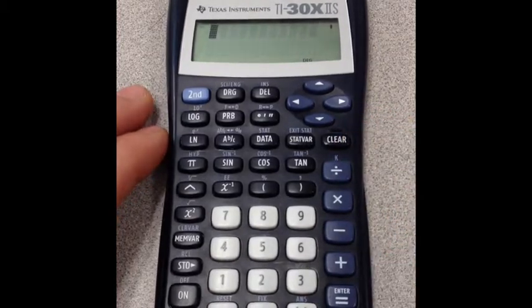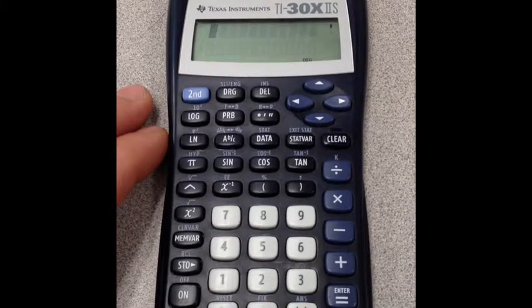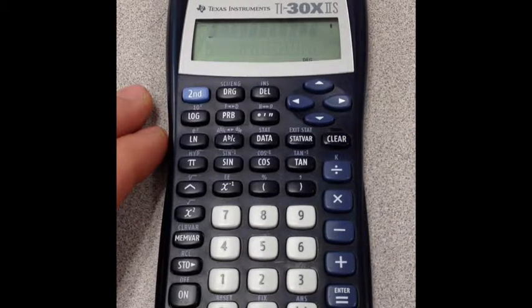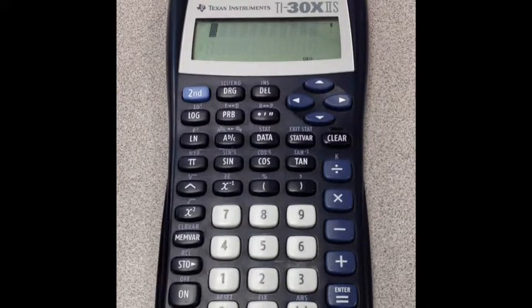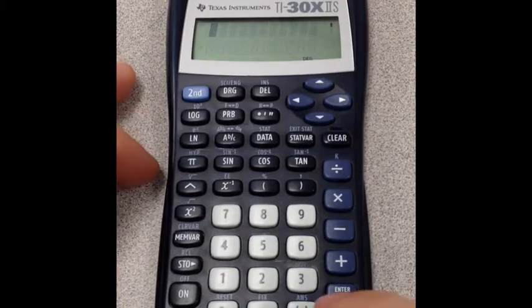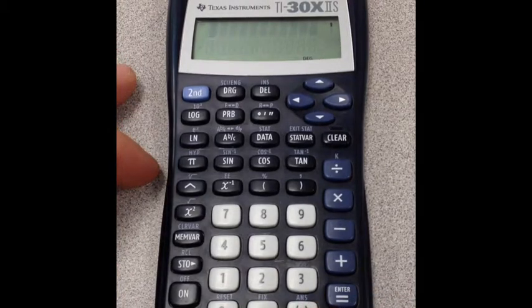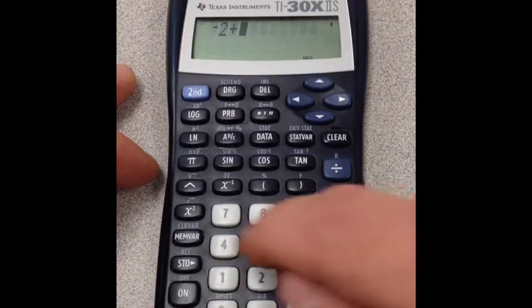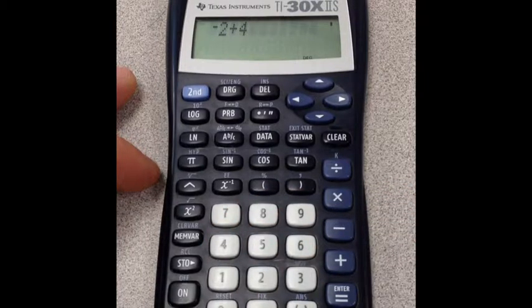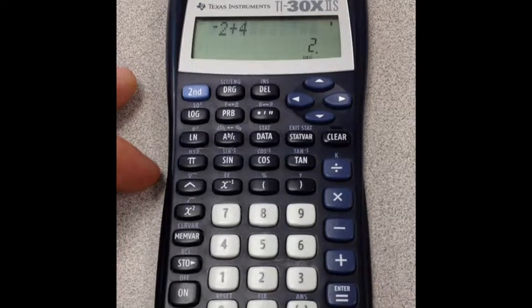My negative button, or my opposite button, is right here. It's at the bottom and it's the negative sign or the opposite sign with parentheses around it. So I'm going to type in negative 2 plus 4. The negative sign, we're going to type it as we would read it or write it. Negative 2 plus 4 equals positive 2.